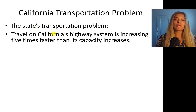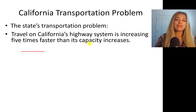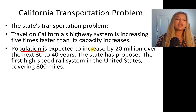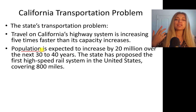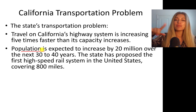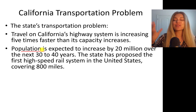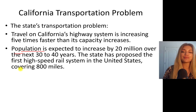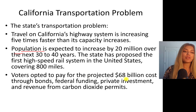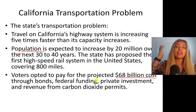California has a big transportation problem. The state's population is growing, and travel on California's highway system is increasing five times faster than its capacity increases. Population is expected to increase by 20 million over the next 34 years. The state has proposed the first high-speed rail system in the U.S., which is very exciting — people from Europe are very used to high-speed rail and it's really convenient. However, European countries are smaller; the USA is huge. This system would cover 800 miles, and it was proposed to be funded through bonds, federal funding, private investment, and revenue from carbon dioxide permits.